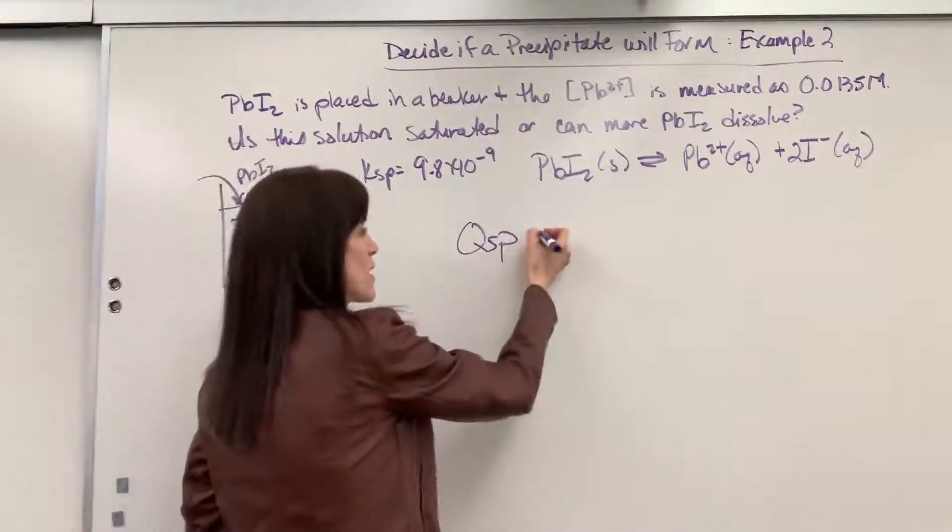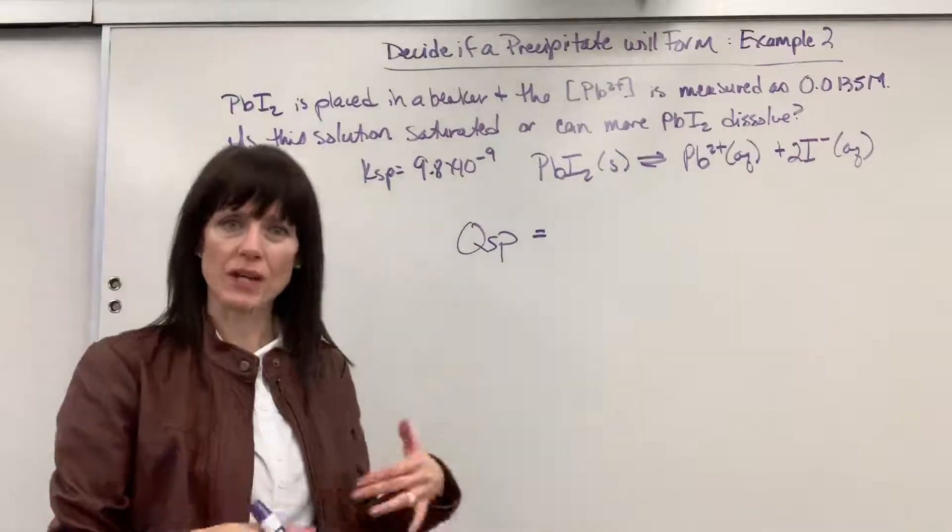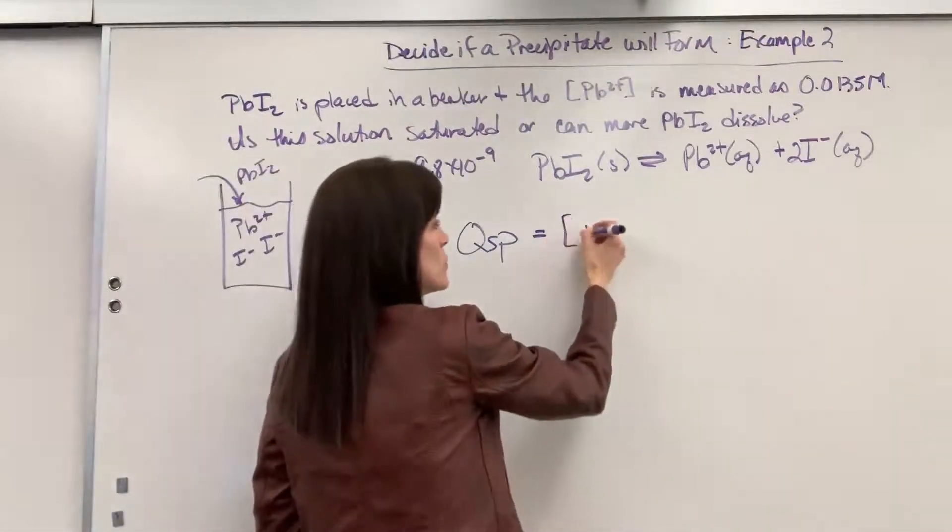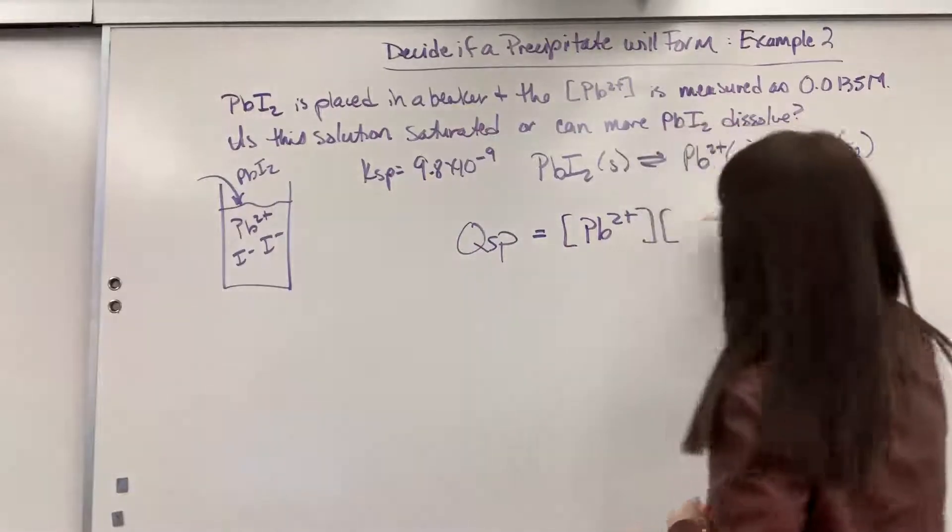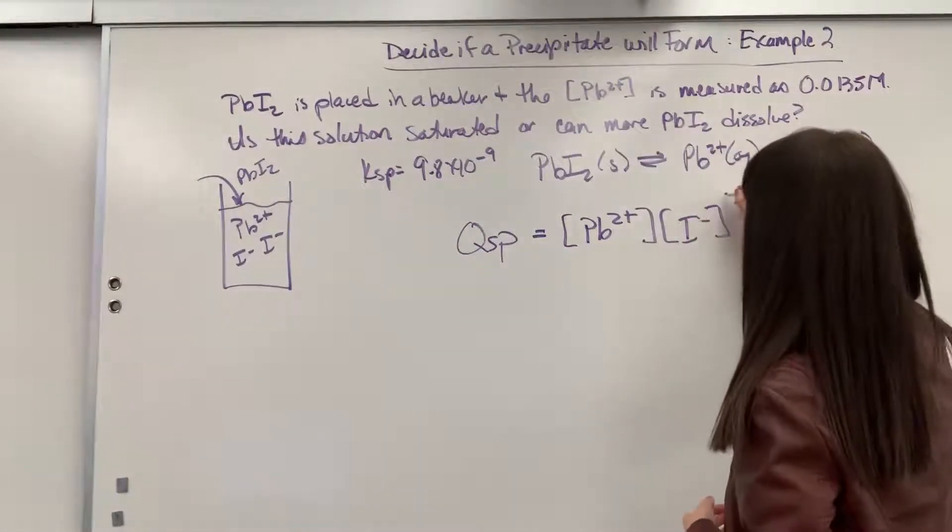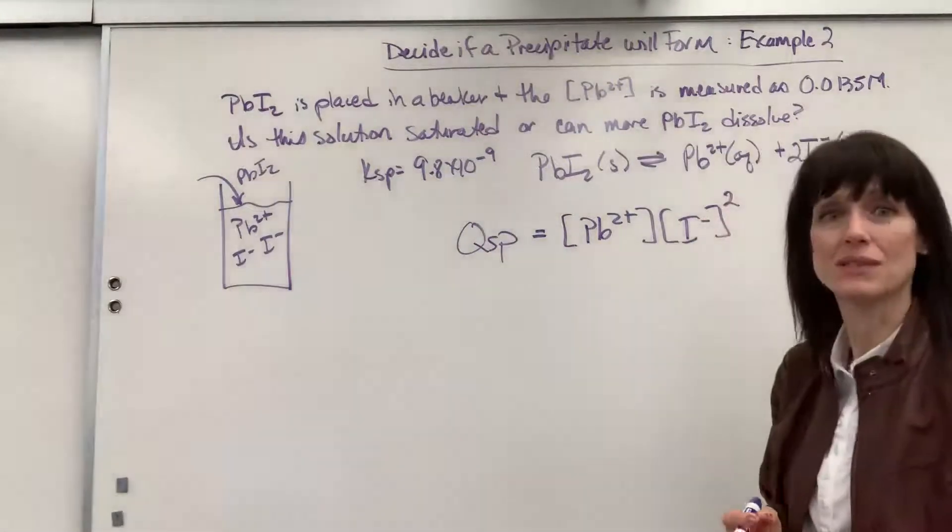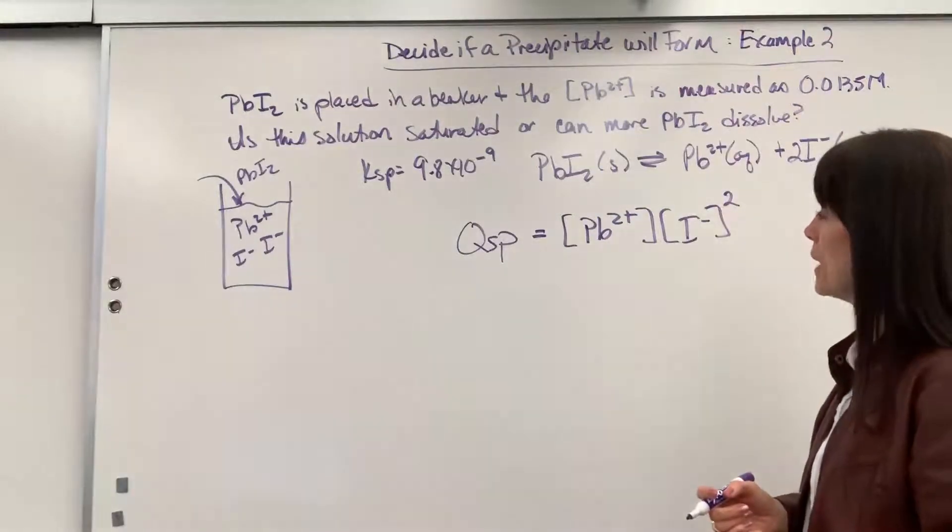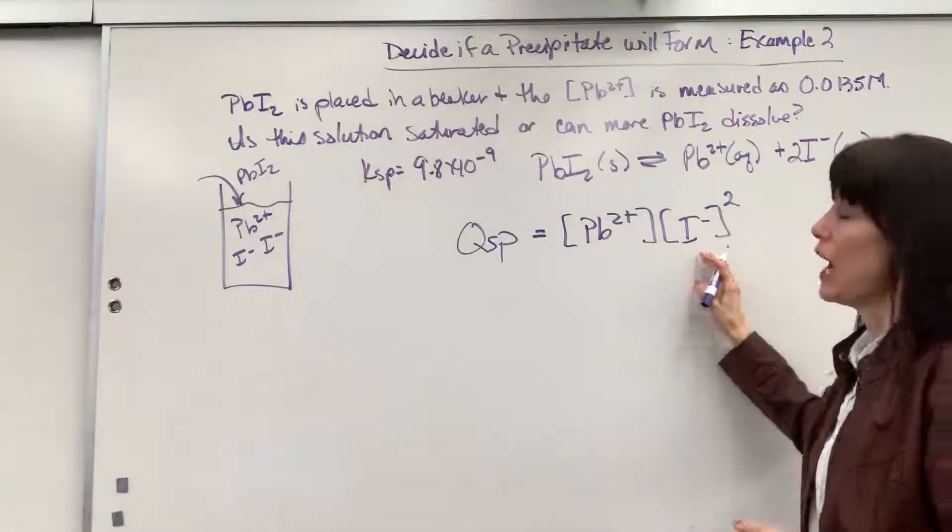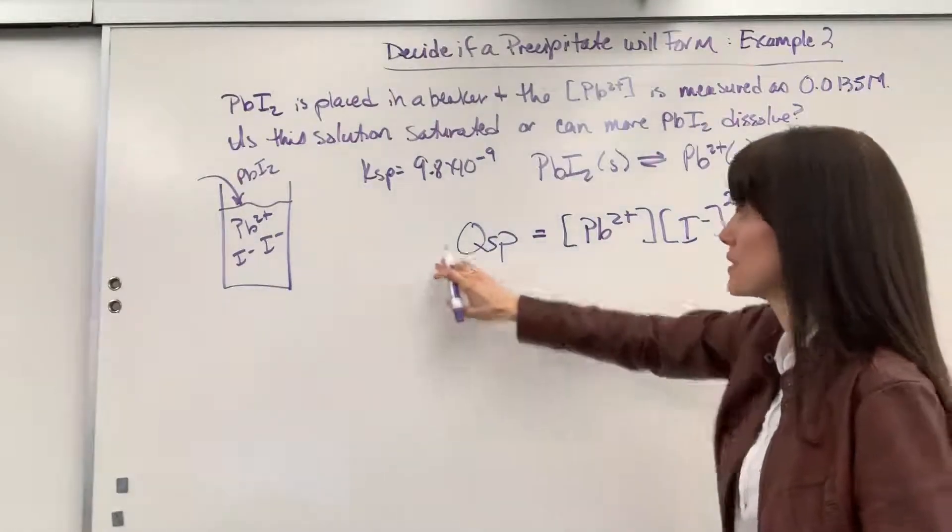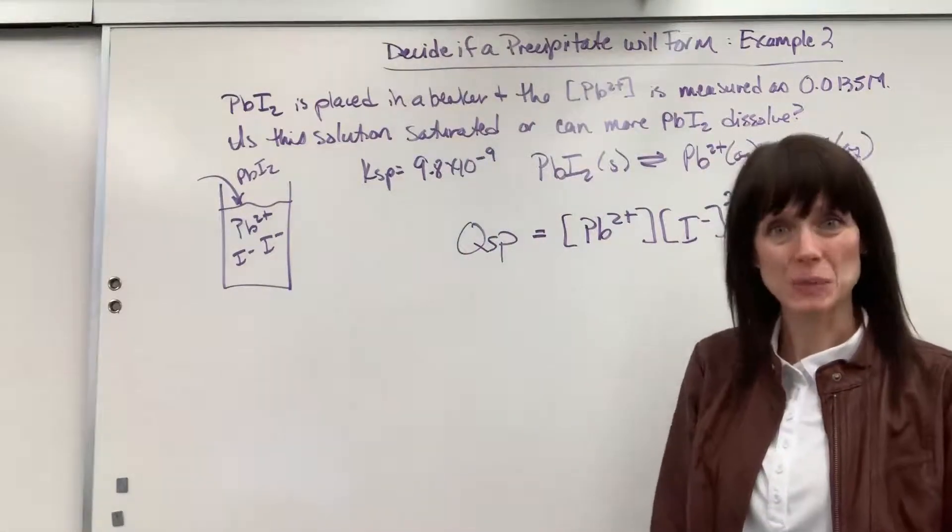So QSP is going to be our same equation of products over reactants, where it will be the lead two plus times the iodide. And the iodide is going to be squared. The iodide will be squared. So we can plug in the concentrations that we have here, and we'll see what QSP is, and then simply just compare it to KSP.